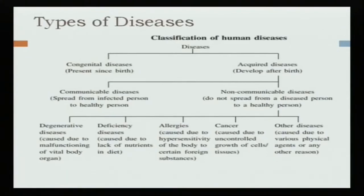Congenital disease mein agar hum baat karein toh yeh present since birth hai — which is present from birth and they are caused by kisi bhi type ki genetic abnormality or metabolic disorder or malfunctioning of any organ ki wajah se ho sakte hain. Whereas acquired disease may occur after birth, during one's lifetime.